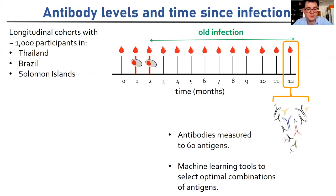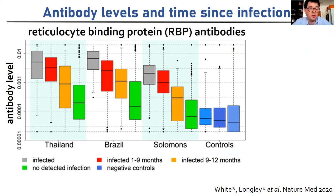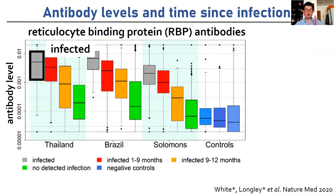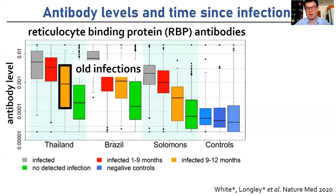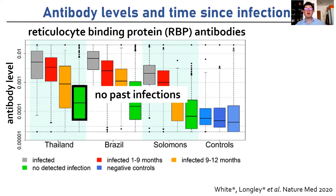We get a lot of very good hits. Our best hit is the antibody response to the reticulocyte binding protein, a protein that the vivax parasite uses to invade red blood cells. Focusing on the Thai data, individuals who are currently infected have very high antibody levels. Those with recent infection — defined as the last nine months — have slightly lower levels. Individuals with older infection have lower antibodies again, and those with no detected infection have the lowest. This phenomenon is repeated in Brazil, the Solomon Islands, and other studies.